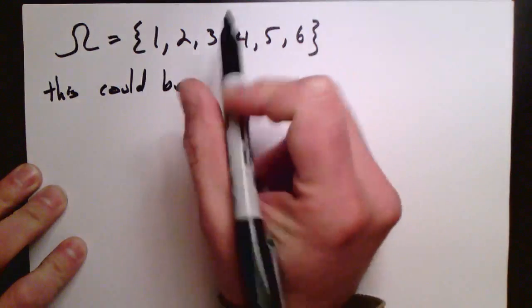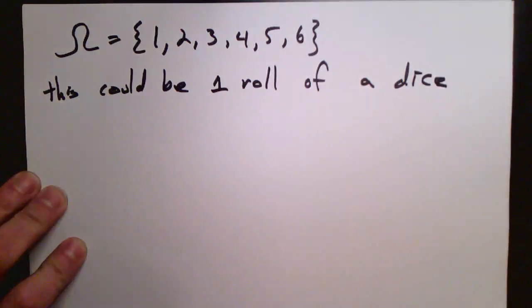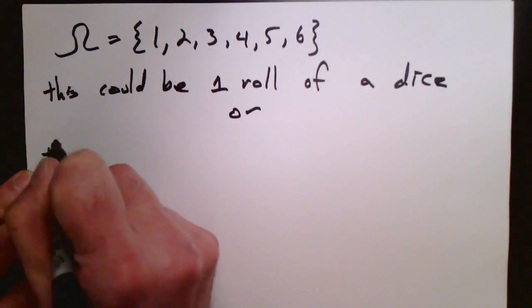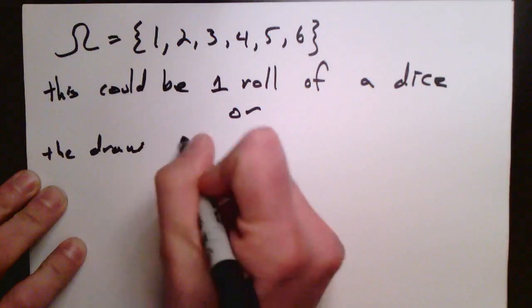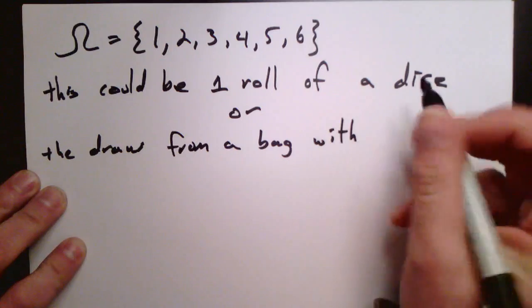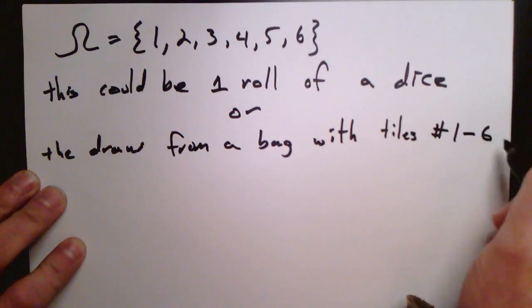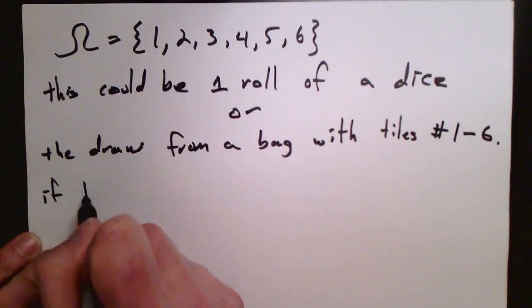Let's just take the outcome space 1, 2, 3, 4, 5, 6. This could be one roll of a six-sided die, or it could also be that we have a bag filled with a whole bunch of tickets and little tiles, and each of those tiles has a number on them. And we're going to reach into that bag and pull out one of the numbers 1 through 6.